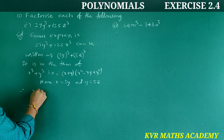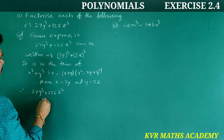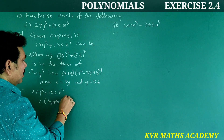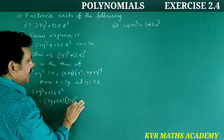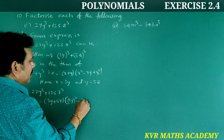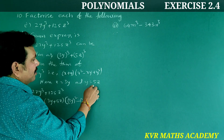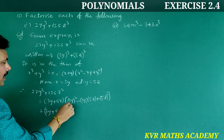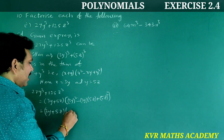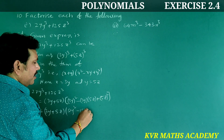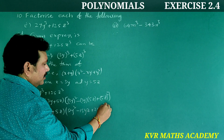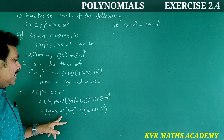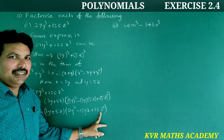Using the formula x³ + y³ = (x + y)(x² − xy + y²), we get: 27y³ + 125z³ = (3y + 5z)[(3y)² − (3y)(5z) + (5z)²] = (3y + 5z)(9y² − 15yz + 25z²).